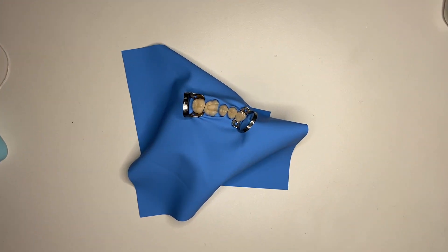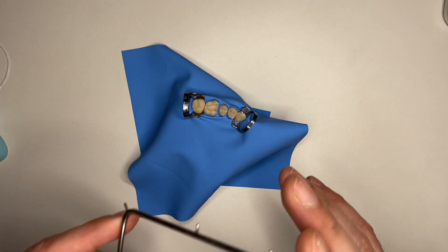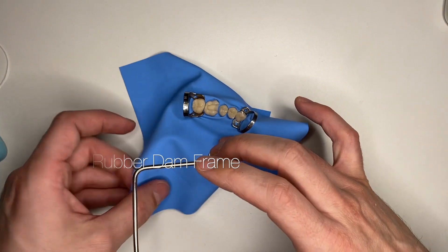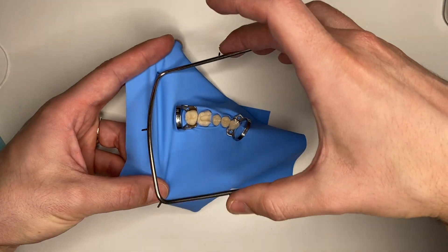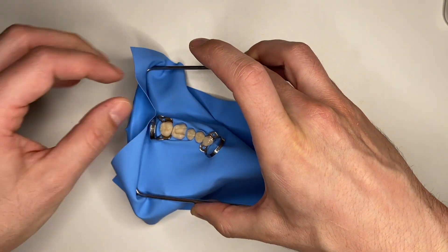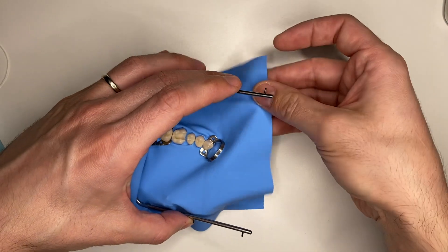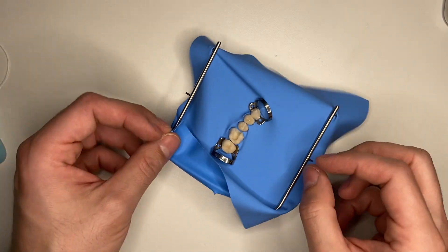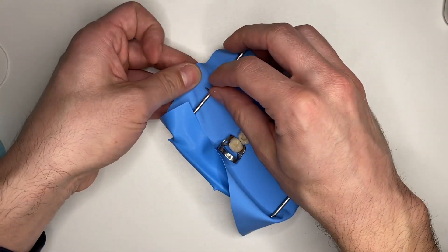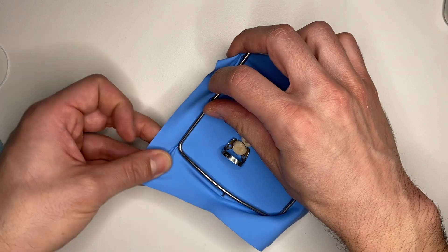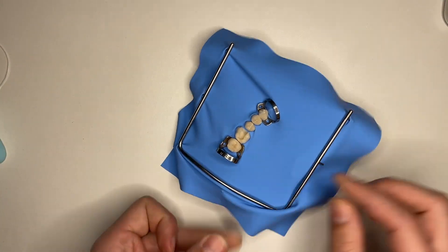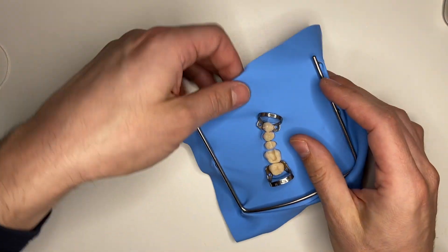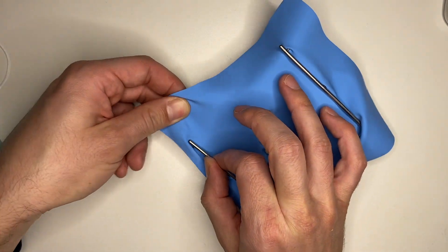Now you're going to be able to seat your rubber dam on this frame. You can first stretch it partially and then you can reseat it so that it allows you to have a nice straight rubber dam.